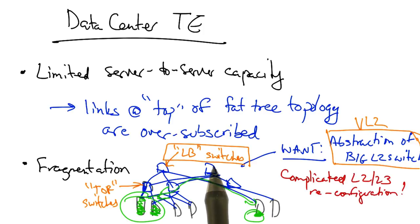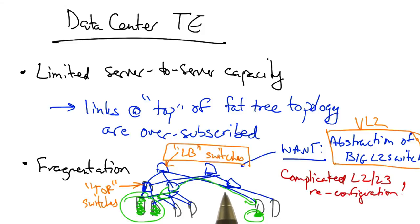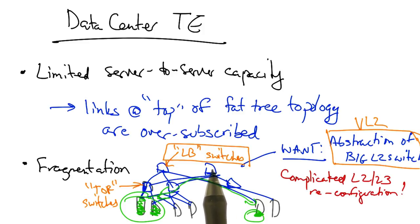To achieve uniform high capacity between the servers and balance load across links in the topology, VL2 relies on flow-based random traffic indirection using valiant load balancing. Let's take a closer look at how that load balancing works.